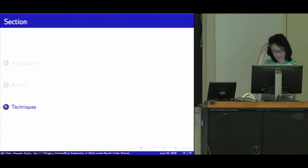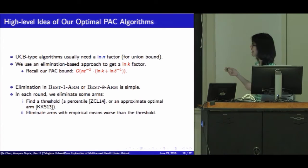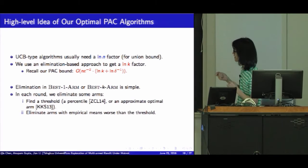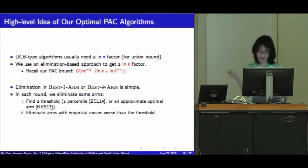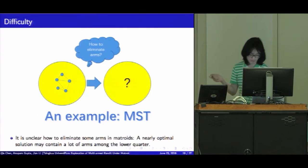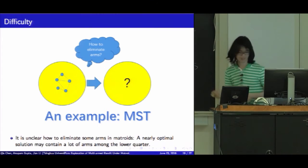Now let's give a high-level idea of our techniques. UCB-type algorithms usually need a log n factor for a union bound over all arms. But we use an elimination-based approach to get a log k factor. Elimination in best one-arm or best k-arm is very simple. It proceeds like this: If you find a threshold, maybe a percentile or an approximate optimal solution, and then you sample other arms and delete those arms whose empirical means is worse than the threshold. But it's unclear how to eliminate some arms in matroid, because a nearly optimal solution may contain a lot of arms from the lower quartile, so using a threshold will not work here.